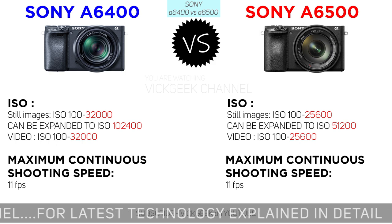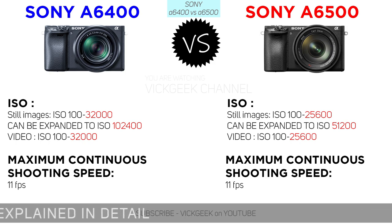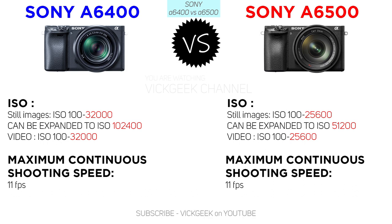The native ISO for still images on the a6400 has a one-stop better range at 32,000 ISO, compared to the a6500 which tops out at 25,600 native ISO. Both can be expanded one stop further. Shooting speed on either camera is the same at 11 frames per second.